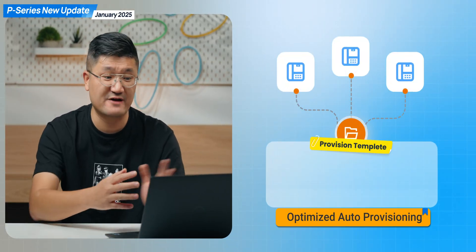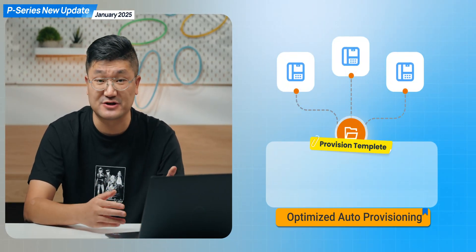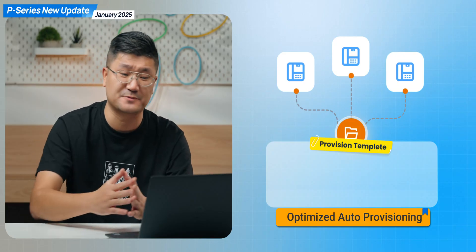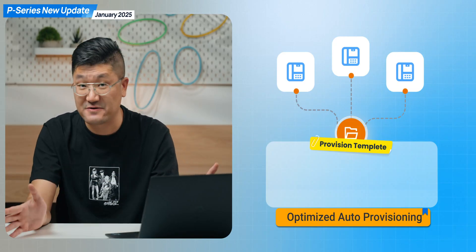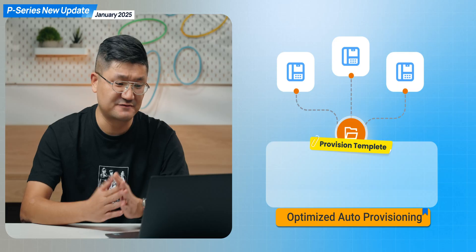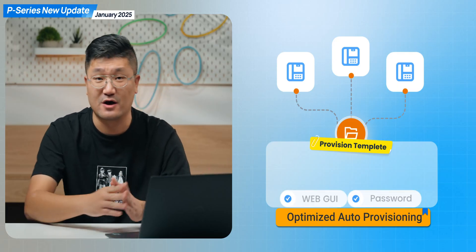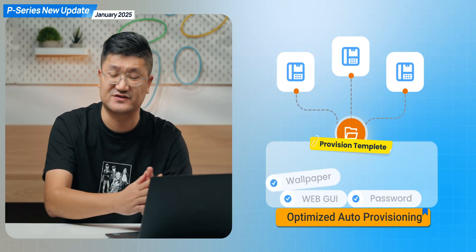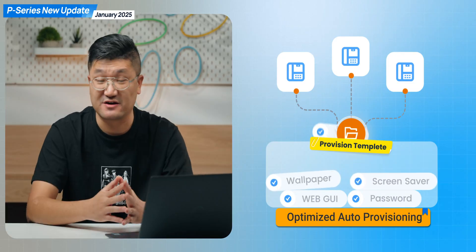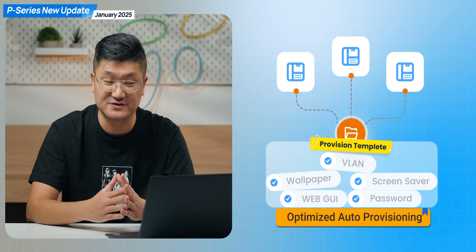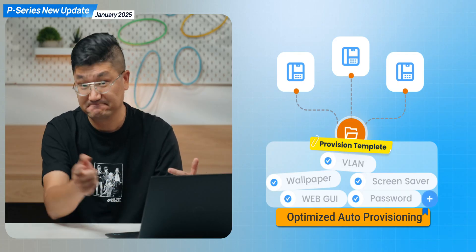The third and fourth features are more like optimizations. We have an update for auto provisioning — if you use auto provisioning to register IP phones, you will be able to have random passwords on your phone web GUI. You can also customize the wallpaper and screensaver, and you can even set up VLAN for your IP phones. All these are going to be supported, so don't forget to give it a try.